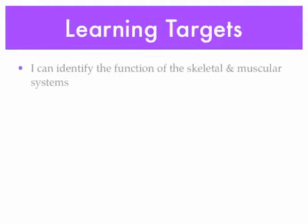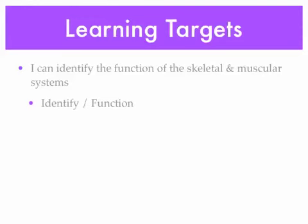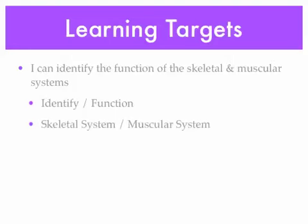The first learning target is that you can identify the function of the skeletal and muscular systems. To identify something means you are able to point it out and give it a name. The function of something is like a job or how it works. You also need to know what the skeletal system and muscular system are, which we'll get into further in the lesson.